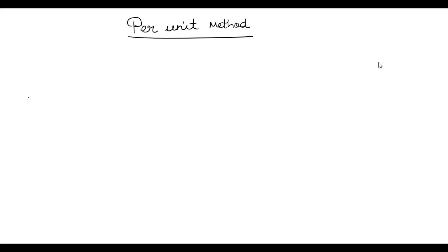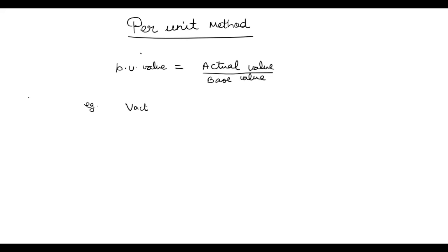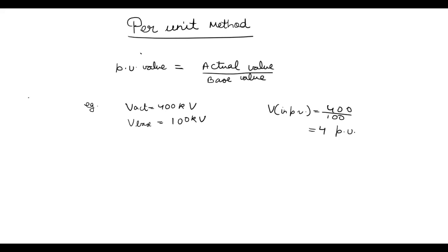Hello everyone. In this video we are going to see what is the per unit method. This method uses unitless values. The per unit value is the actual value in some units divided by the base or reference value in the same unit. For example, if the actual voltage value is 400 kV and the base value is 100 kV, then voltage in per unit will be 400 upon 100, which equals 4 per unit.